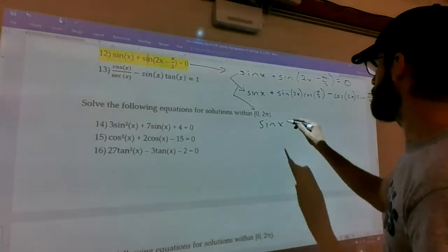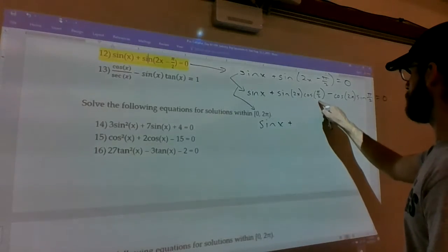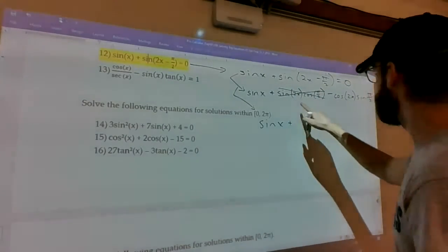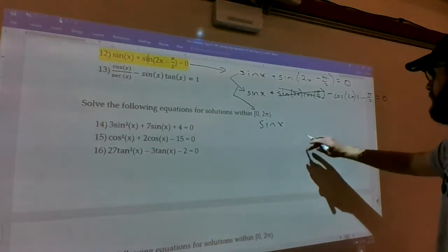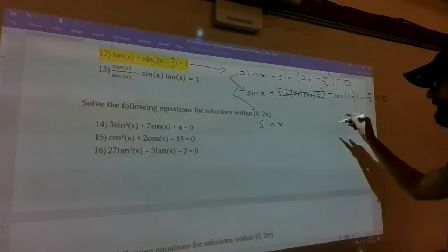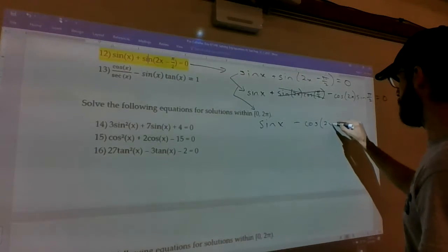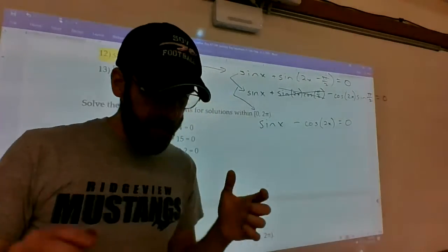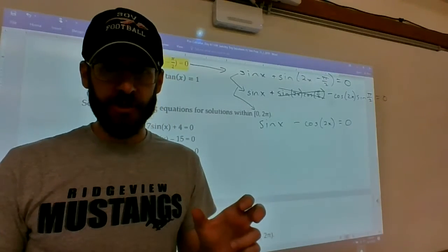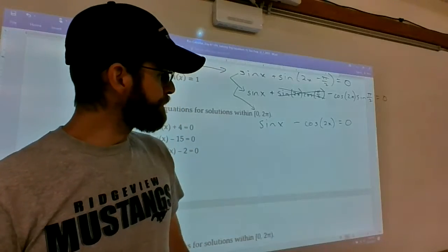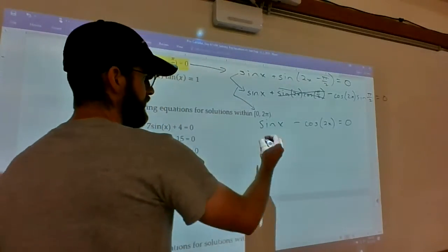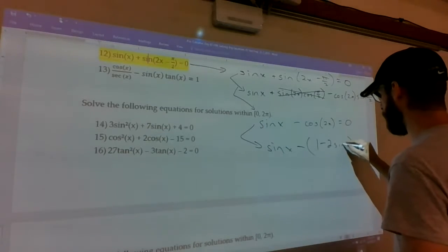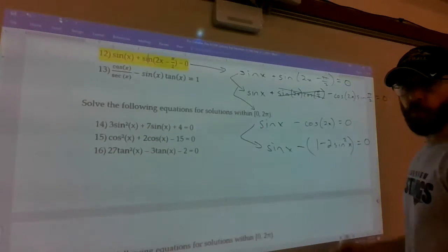So you get sine of x plus... cosine of pi over 2. That is 0. 0 times sine of 2x is 0. And then this will be minus cosine of 2x times 1. So it's minus cosine of 2x. So when you see this, you go back to your formula sheet and you ask yourself, what would be the best version of cosine of 2x to change into? Since there's a sine of x right there, it seems like sine of x minus 1 minus 2 sine squared of x would be our best choice for that.